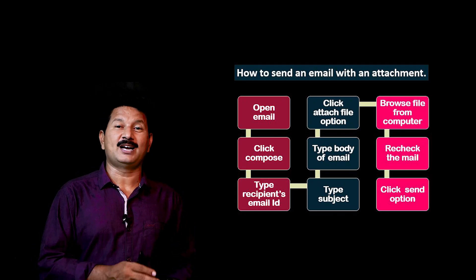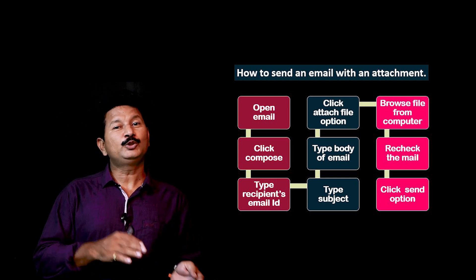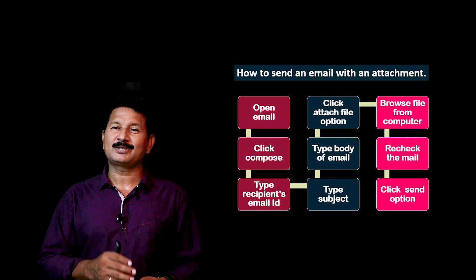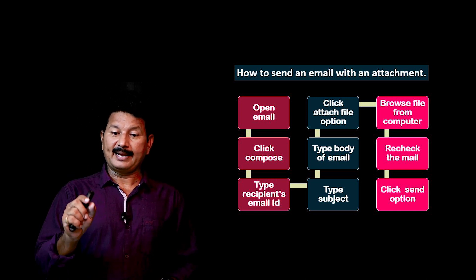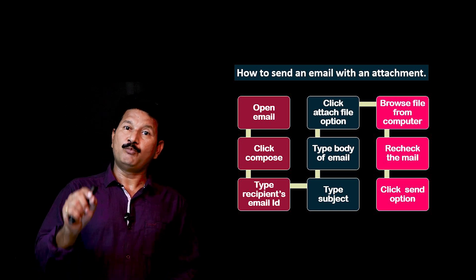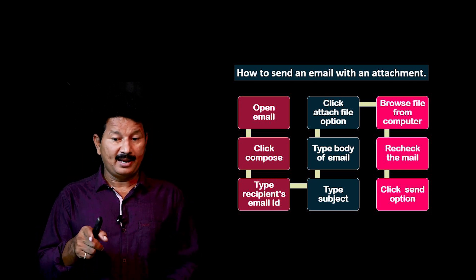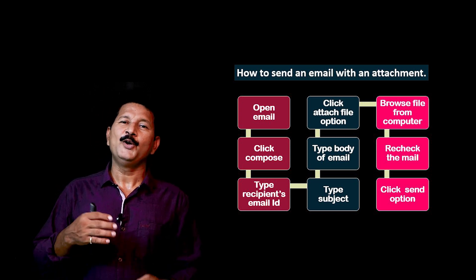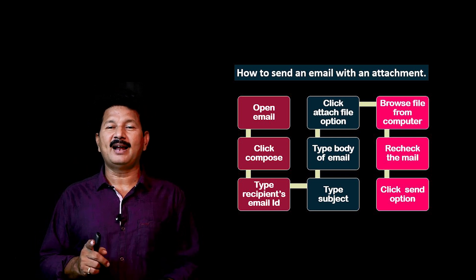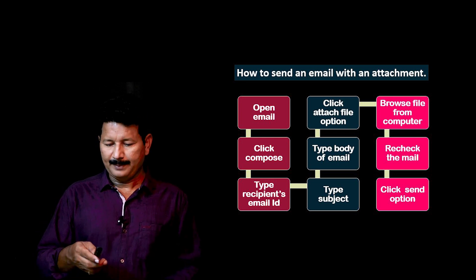Now we will look at the flow chart, the third format. Study the flow chart and write instructions on how to send an email with an attachment. The steps are: open email, click compose, type recipient's email ID, type subject, type body of email, click attach file option, browse file from computer, recheck the mail, and finally click send. When doing a flow chart, use imperative sentences — verb plus object.